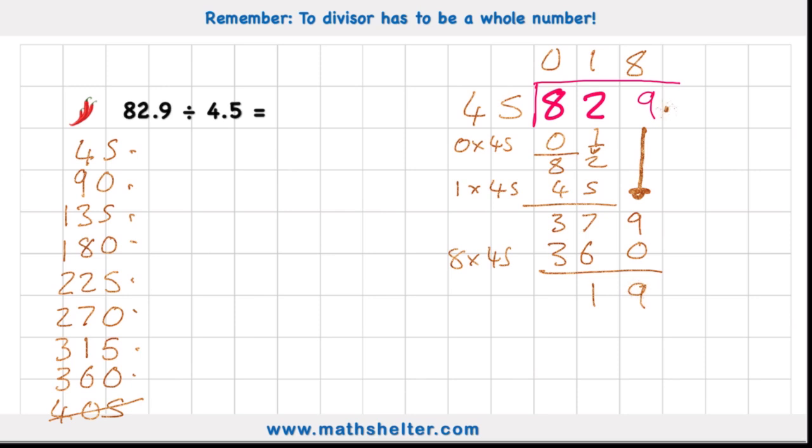Now I need to put a decimal placing point and put a 0 to bring down my 0. And now I'm looking at how many 45s there are in 190. Well, I could get to 1, 2, 3, 4 to get me to 180. And 4 times 45 is 180, leaving me with 10. But again, I'm not at the magic 0, so I'm going to put another 0 after my decimal, bring it down.